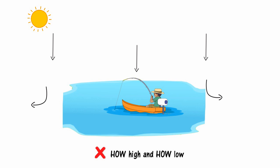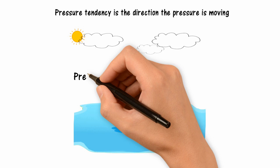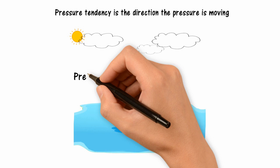Pressure tendency is the direction the pressure is moving. For example, a pressure reading of 29.85 with a tendency of plus .03, you have low pressure that is increasing.